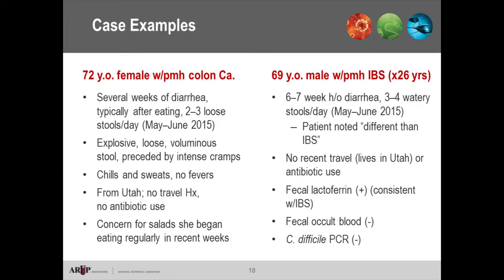Consider two case examples. A 72-year-old female with a past history of colon cancer experienced several weeks of diarrhea — explosive, loose, high-volume stools two to three times per day with cramping, chills, and sweats but no documented fever. Onset was late June to early July 2015. She was from Utah, had no recent travel, had not used antibiotics, and noted that symptoms started after beginning a super-veggie salad diet.